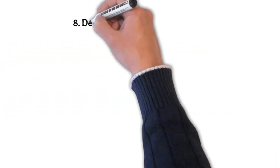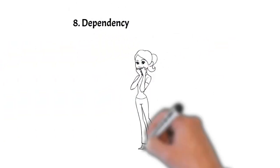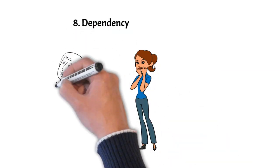Number eight, dependency. They might become overly dependent on being needed, leading to clinginess or possessiveness in relationships.